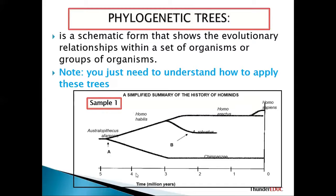Let's interpret phylogenetic tree sample number one. We count from zero — we don't count from this side going downwards. This tree starts from this side going across. So Australopithecus afarensis originated around 4.8 million years ago — between four and five on the scale — because zero is on this side.